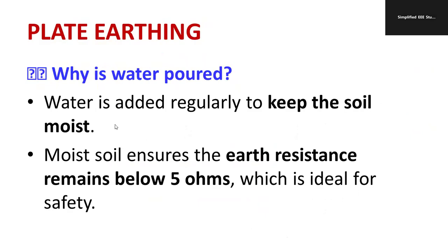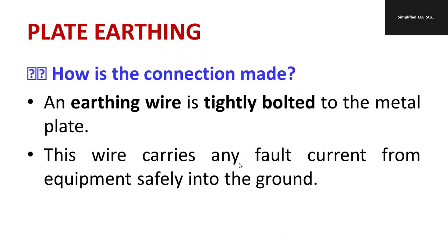So why is water poured? The purpose of adding water is to keep the soil moist. If you maintain the soil moist, the earth resistance will be reduced. You need to ensure that earth resistance should be below 5 ohms so that more fault current will pass to the ground. Otherwise, if high resistance exists in the soil, no fault current will pass to the plate.